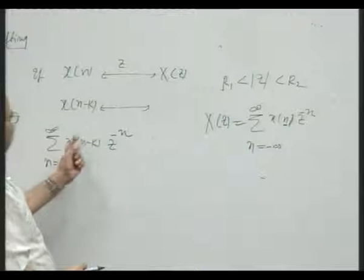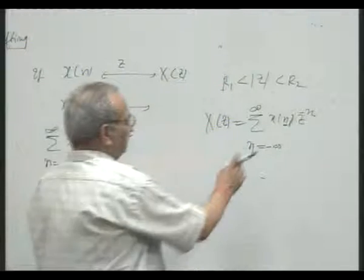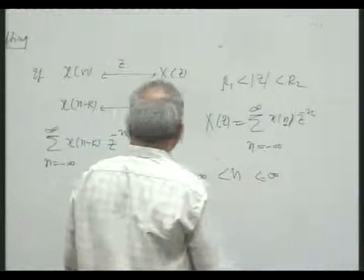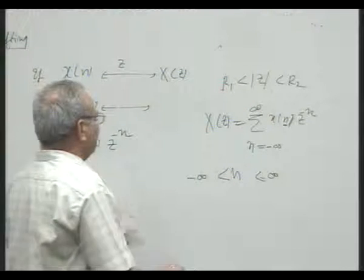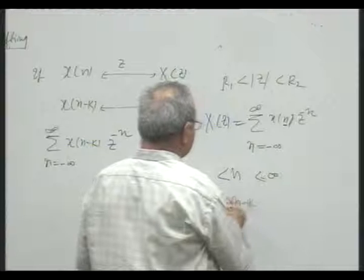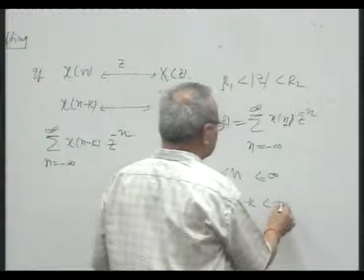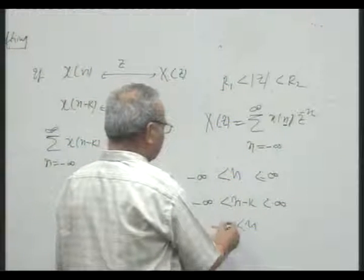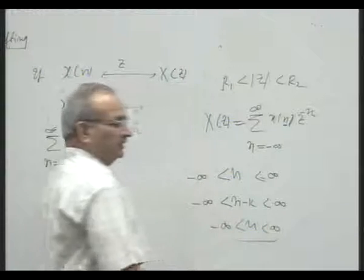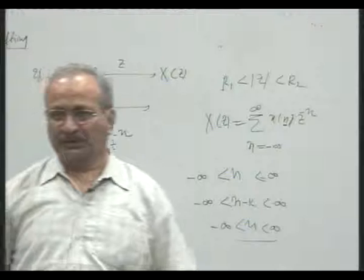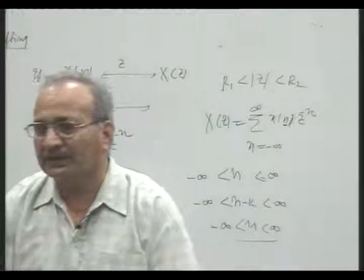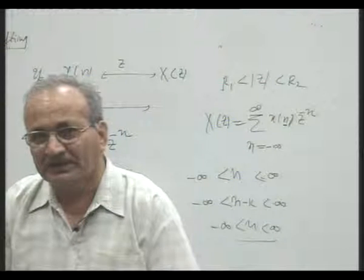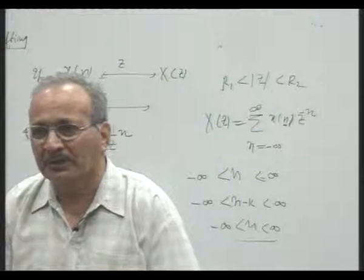Since this is a two-sided signal, say the range of n is this. Then in this case, n gets replaced by n minus k. So the range of n minus k also becomes this. If I add k to both sides, I get the same range again. That means in the two-sided case, even if a signal is shifted either to the left or to the right, we will get the same ROC — no signal component is lost.